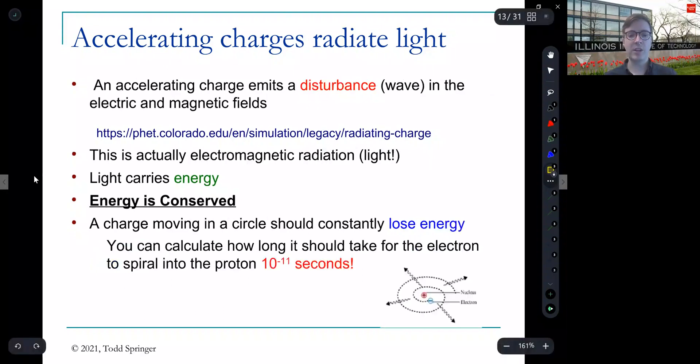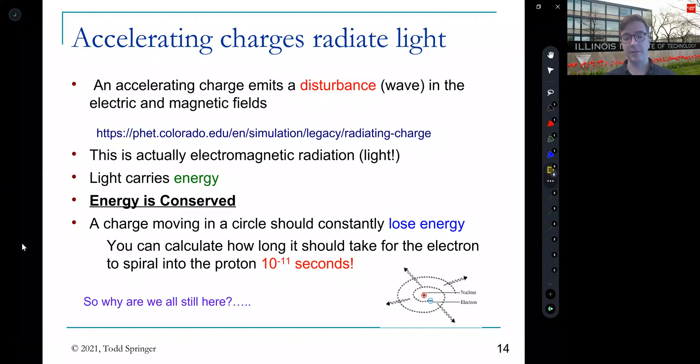And to make matters worse, you can calculate how long it would take the electron to spiral in towards the nucleus. You can figure out how long would it take if it's accelerating to emit enough energy to have none left and crash into the nucleus. And that is 10 to the minus 11 seconds, which is disturbingly short. So why are we all still here? We've all lived much longer than 10 to the minus 11 seconds. Atoms have been around for a really long time. So there's something wrong here. There's something we don't understand. That classically, according to the theory of electromagnetism, the atom should not be stable.